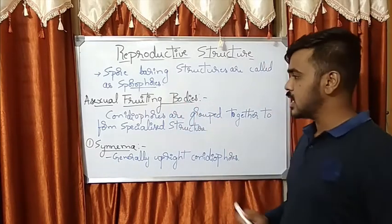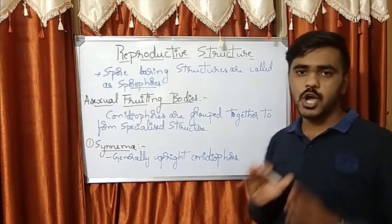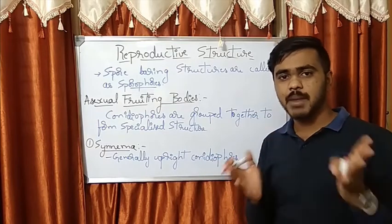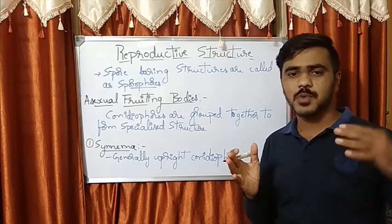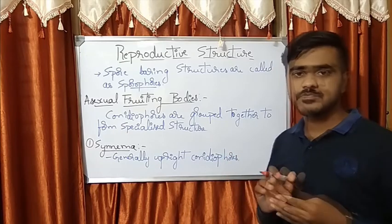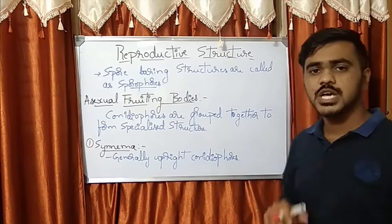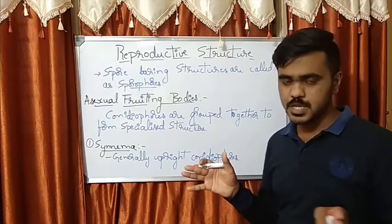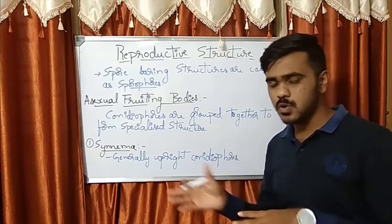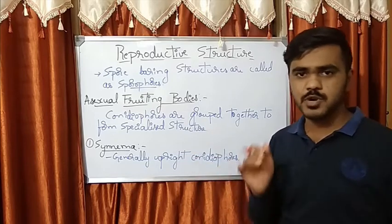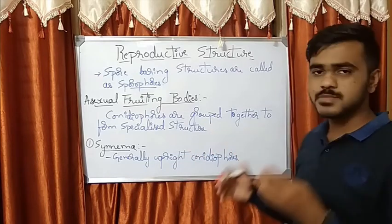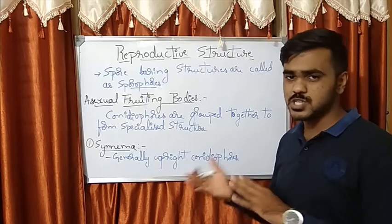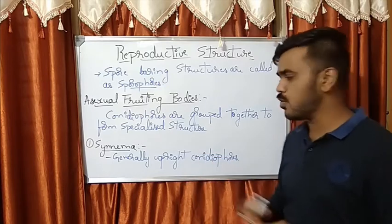In the asexual fruiting bodies, recall the asexual spores: chlamydospores, conidiospores, and sporangiospores. Among them, the fruiting bodies are only for the conidiospores. The conidiophore is the fruiting body, and among them they are grouped into different specialized structures, which we shall see now.